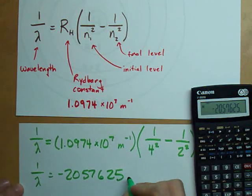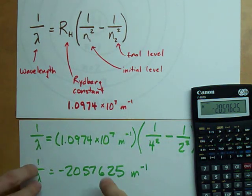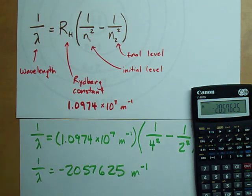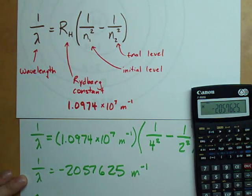Now this is in meters to the minus 1. Now how do I solve for actual wavelength? I actually just flip everything. Let me explain that to you. I can flip this and make it just lambda or the wavelength if I take one over the answer that I have.